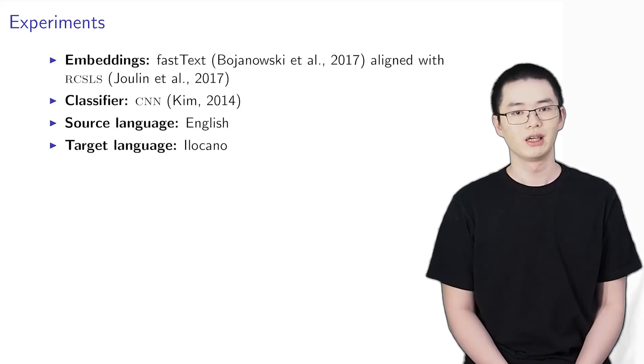For our experiments, we use fastText embeddings that are aligned with RCSLS. Our text classifier is a convolutional neural network. We train our classifier only on English documents and test on Ilocano documents.